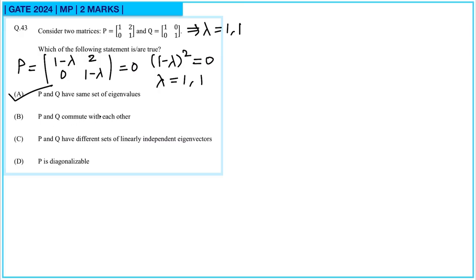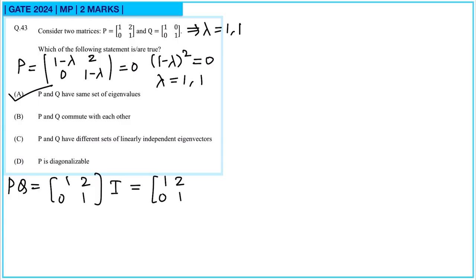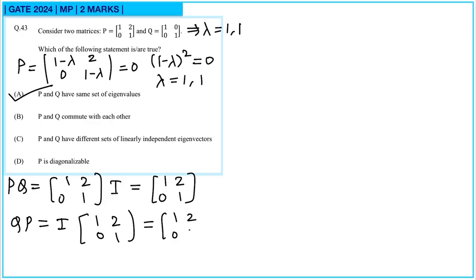Option B: do P and Q commute? Computing PQ gives P times the identity matrix, which is just P. And QP is the identity matrix times P, which is also P. So yes, they commute with each other, and option B is correct.